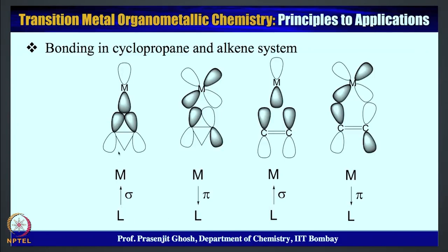So there is a sharp distinction between C-C bond activation of a cyclopropane ring containing a sigma bond versus C-C bond activation of an alkene containing a pi bond. Similarly, metal-to-ligand pi back-donation completely cleaves the C-C sigma bond of cyclopropane, whereas in the alkene case back-donation only occurs at the pi* orbital, cleaving the pi bond while the C-C sigma orbital remains untouched.